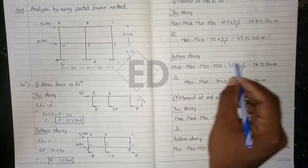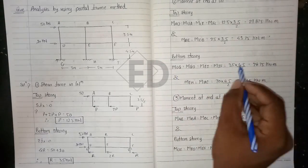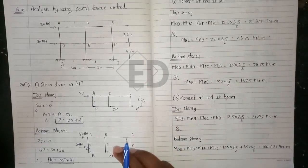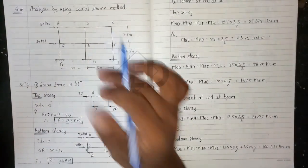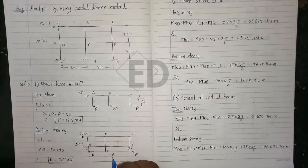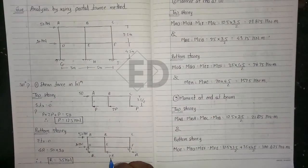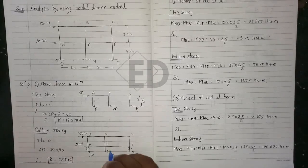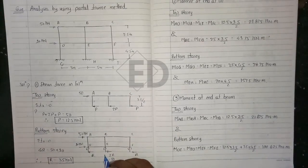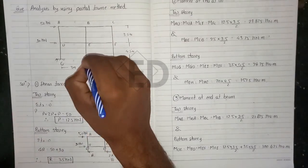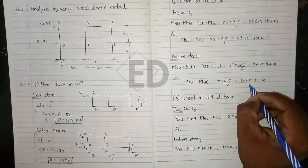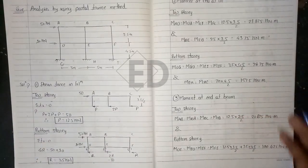This is the value of all these moments. For the column E to H, it is 2R — that is 35 × 2 = 70 — into h/2. We get the moment at that point as 157.5 kNm.